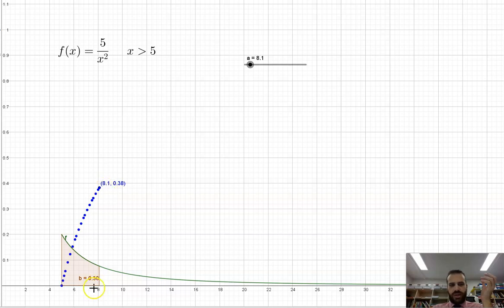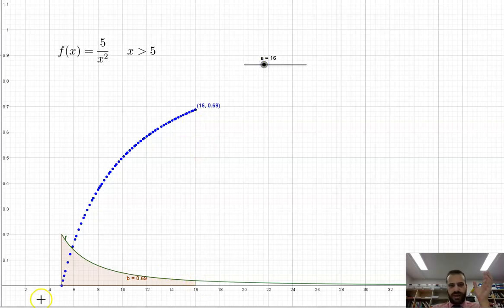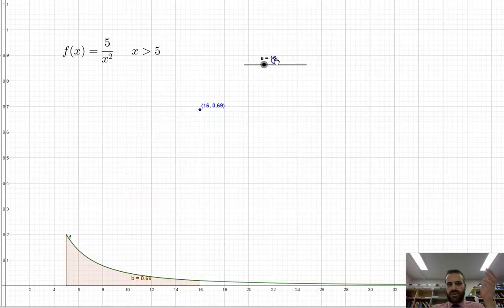When x is equal to 8.1, the area under the curve is 0.38. And you can see this curve has gone up to 0.38. Let's go up a little further. At 16, the area under the curve between 5 and 16 is 0.69. There is a 69% chance that somebody gets a score between 5 and 16. And it goes on and on.